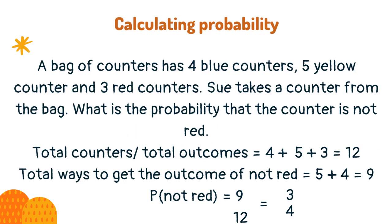A bag of counters has 4 blue counters, 5 yellow counters and 3 red counters. Sue takes a counter from the bag. What is the probability that the counter is not red? The first step is to find the total number of outcomes. To do this, add all the counters: 4 plus 5 plus 3 equals 12.